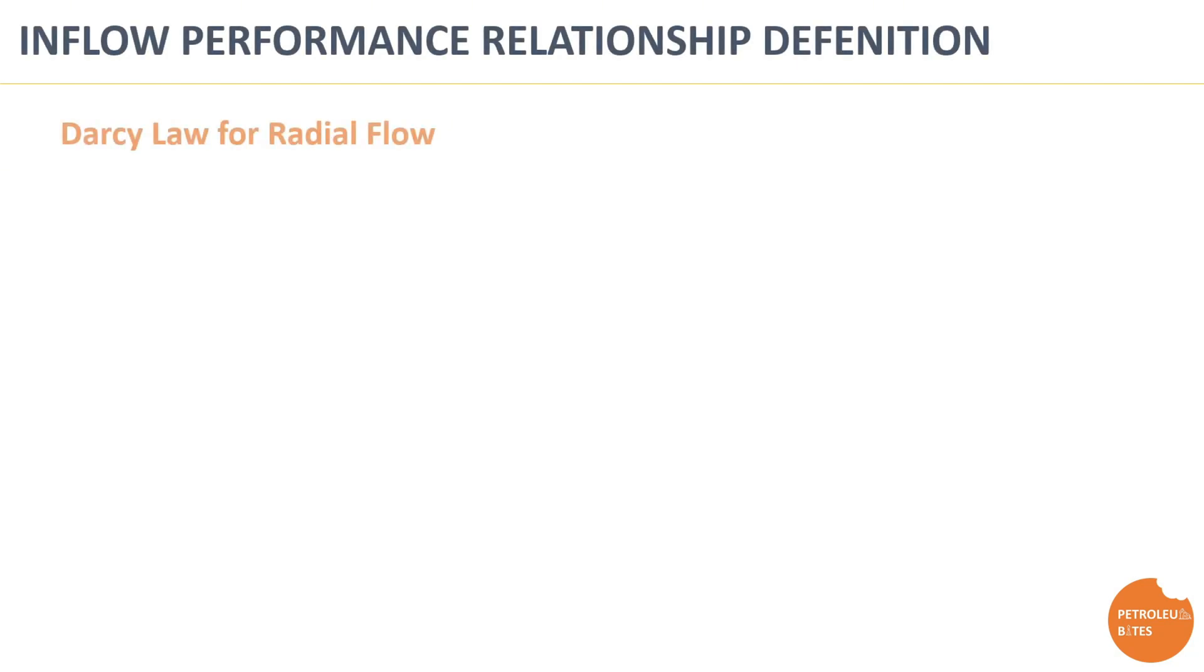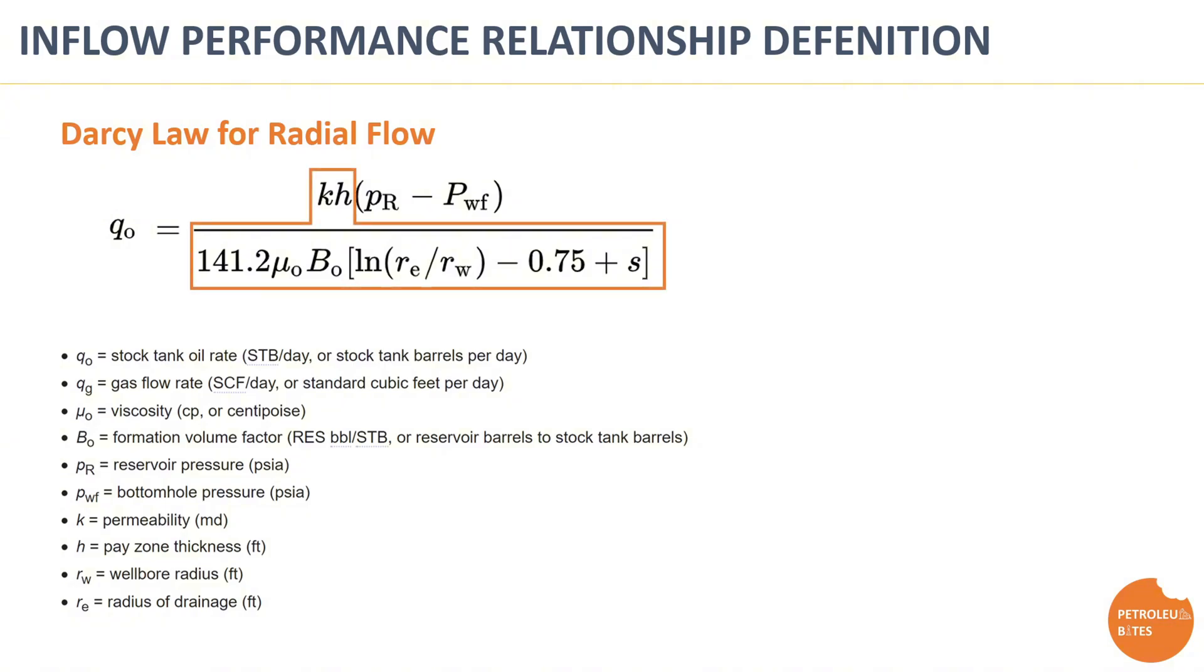Darcy's law for radial flow blends all contributing factors in one single equation. It's clear that all equation parameters are constant, except for flow rate and drawdown pressure. This constant value is called Productivity Index, and it is the amount of flow rate achieved at 1 psi drop in pressure. Productivity Index helps in creating and understanding inflow performance relationship curves and well performance.